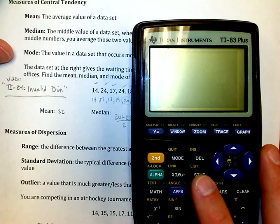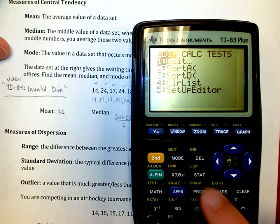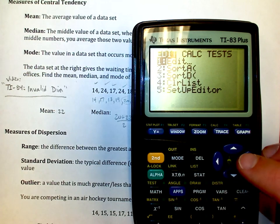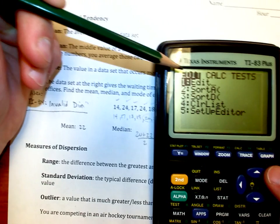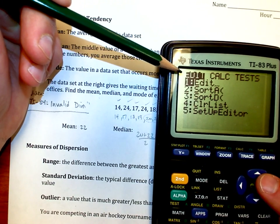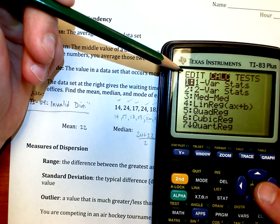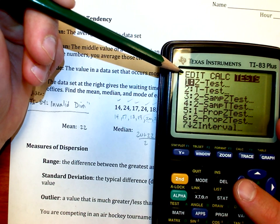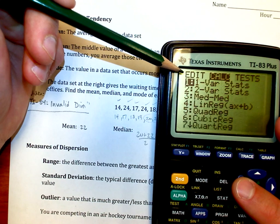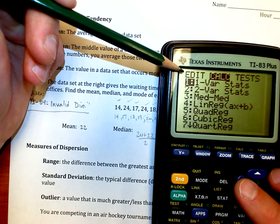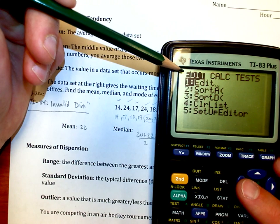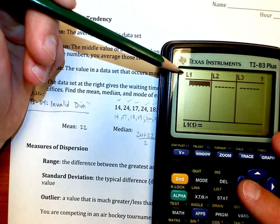We're going to go into the stat menu. When I click statistics, it gives me a couple of options. Do you want to edit the stats, do calculations with your statistics, or run some tests? For algebra two, we want to do anything but putting values in and doing a couple of calculations. Let's edit our statistics.